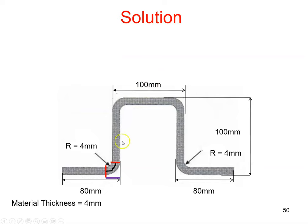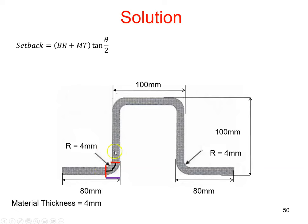The next thing is to calculate the setback — so this distance here. The formula for that is the bend radius plus the material thickness multiplied by the k-factor, where the k-factor is tan of the angle divided by 2. So that's 90 degrees bend angle, meaning tan of 45. Tan of 45 is 1, so the setback is 8 millimetres.